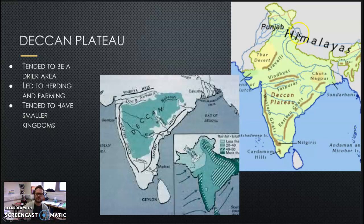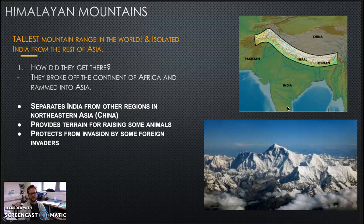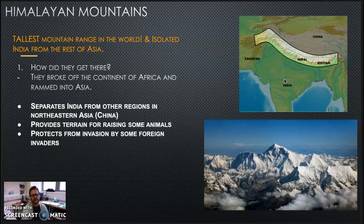The other major geographic feature we want to look at: we have various rivers, we have the mountains, we also have our coastal regions. But we have the Deccan Plateau, which was an area that tended to be drier. That actually led to herding and farming. Throughout history it also meant there were a lot of smaller kingdoms broken up in that region. Coming back to the coastal areas: for the people in India that lived around the coast, the major sources of income and growth were from trading and also fishing. They were some of the earliest traders and did a lot of fishing.